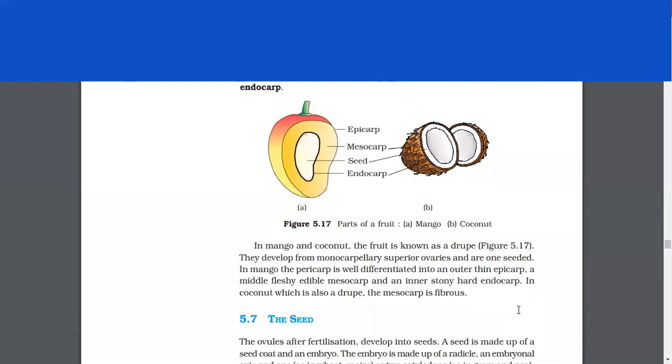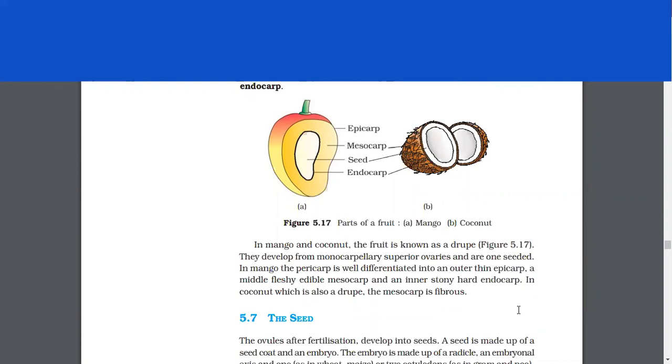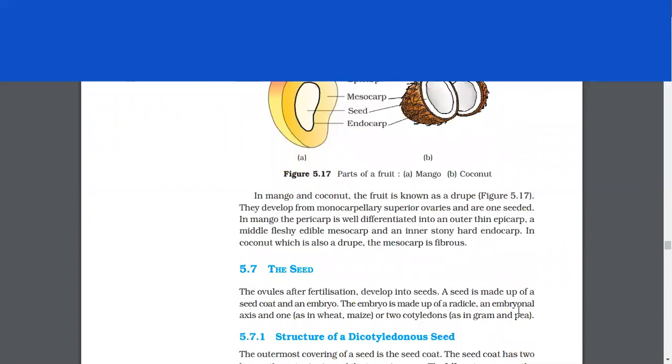In mango and coconut, the fruit is known as a drupe. They develop from monocarpellary superior ovaries and are one-seeded. In mango, the pericarp is well differentiated into an outer thin epicarp, a middle fleshy edible mesocarp, and inner stony hard endocarp. In coconut, which is also a drupe, the mesocarp is fibrous.